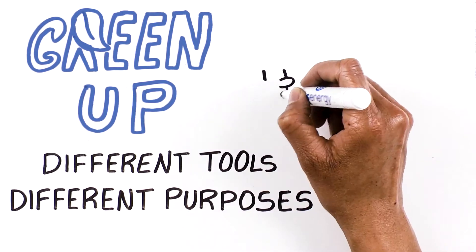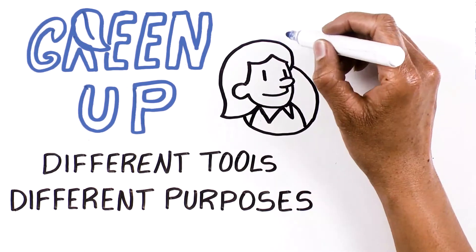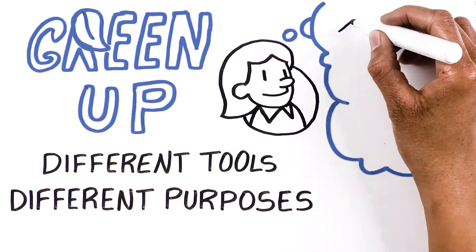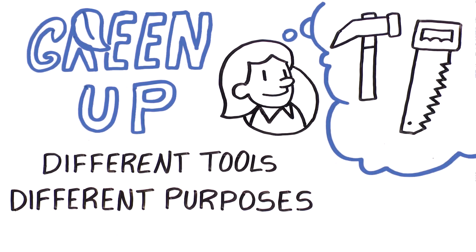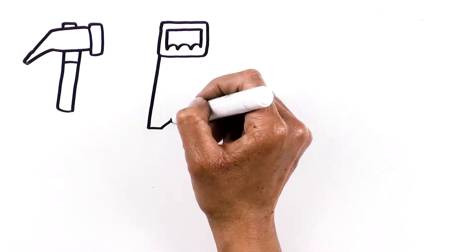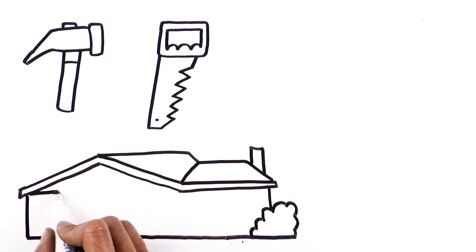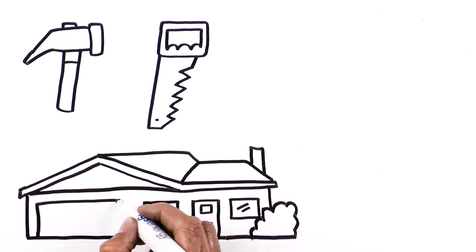The EPA provides this helpful analogy. Think of offsets and RECs as two tools in your sustainability toolbox, like a hammer and a saw. They are not interchangeable. Each tool is used in building a house, but each is used to accomplish specific tasks. One is not more important or better than the other.